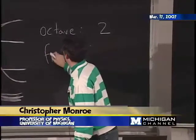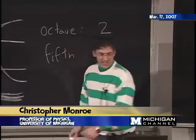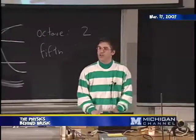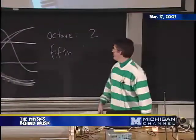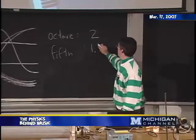And a fifth is, again, that nice ratio, one of the fundamental ratios, 3 to 2. The faster one is 3, the slower one is 2. So a fifth is 1.5, 3 halves.